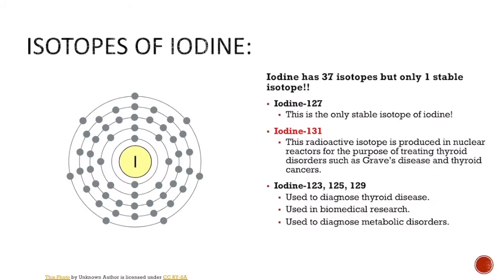Iodine is the next element we're going to talk about. Iodine has 37 known isotopes, but only one of those isotopes is stable. All of the other isotopes of iodine are radioactive to some degree.